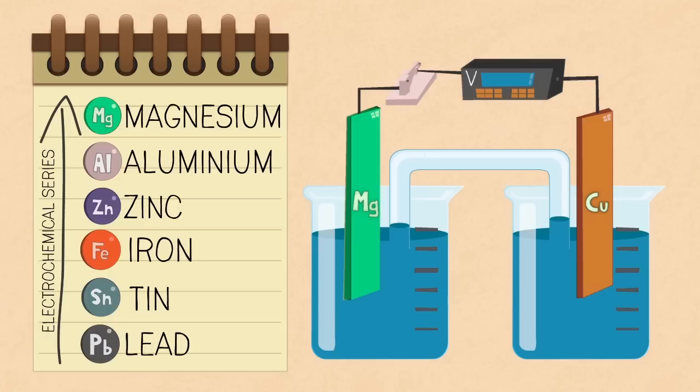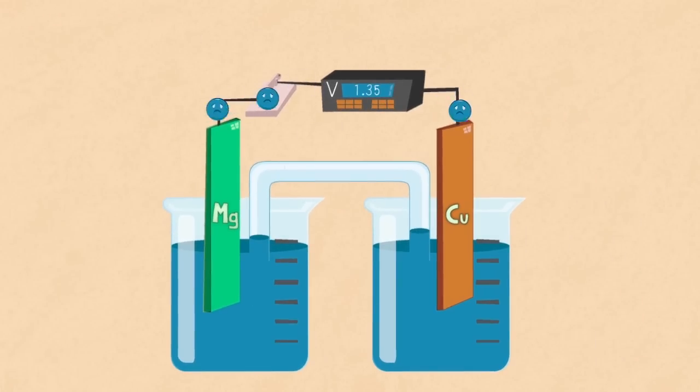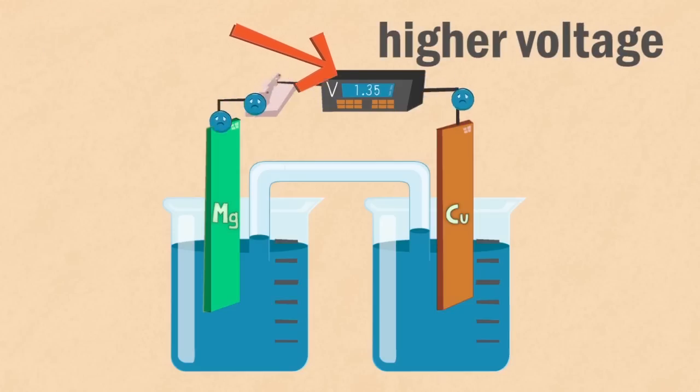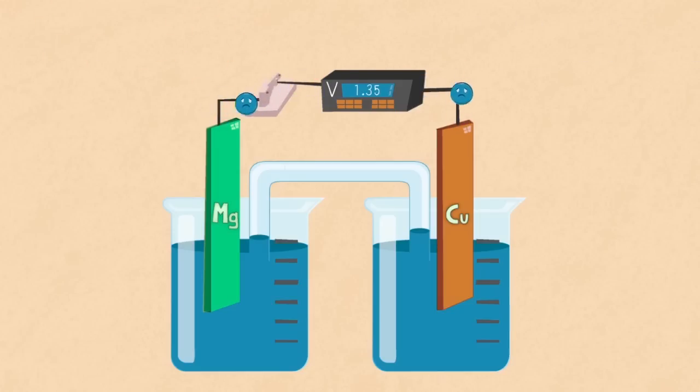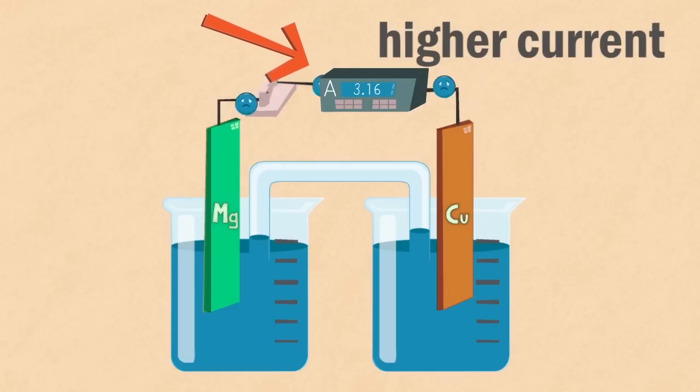The correct answer is that magnesium would push its electrons away with a greater force towards the copper. This would cause a higher voltage reading on the voltmeter. Similarly, as a result of a greater force on these electrons, more charges would pass a point in a given second. This means that the current would be higher as well. Did you get it right?